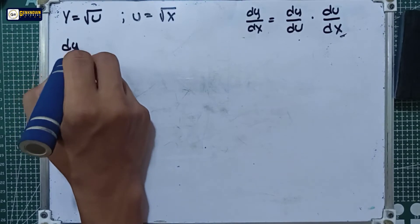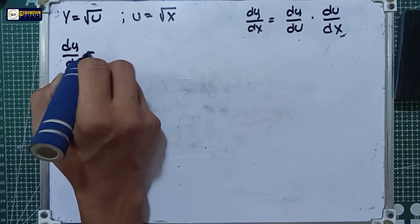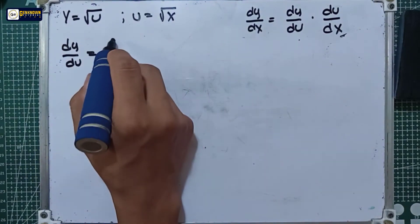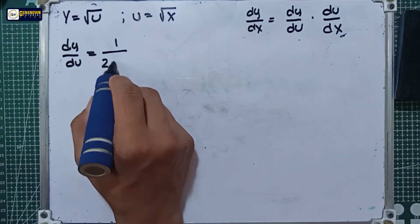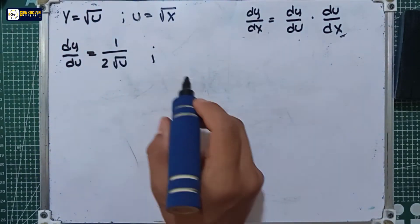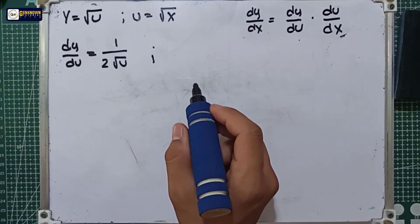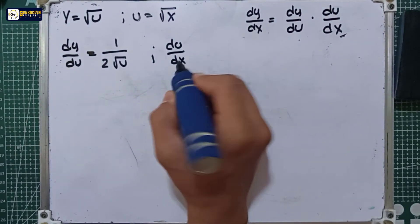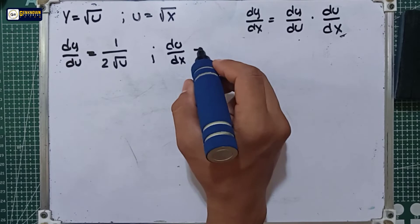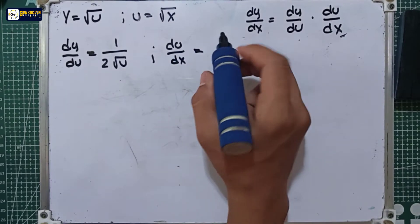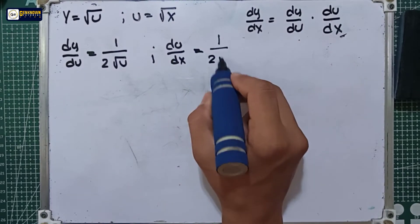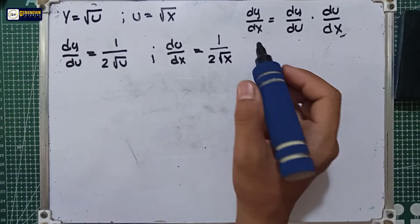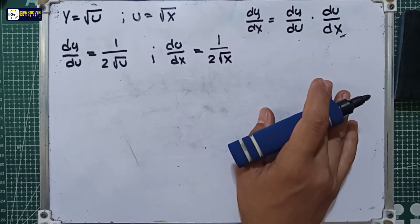We will derive the dy equation with respect to u, so dy over du is equal to the derivative of the square root of u, which is 1 over 2 square root of u. For the u equation, we derive with respect to x: du over dx is equal to the derivative of the square root of x, which is 1 over 2 square root of x. Multiplied by the derivative of x, which is just 1, so no need to write it.